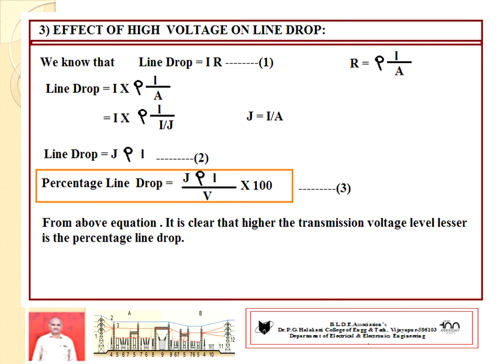Less line drop gives higher efficiency of the system. These three factors — volume of copper, line efficiency, and line drop — are very important not only from an examination standpoint but also in the design of AC transmission conductors. Line drop is less, line efficiency is more, and the volume of conductor material required is less — all three points favor going for higher voltage designs.